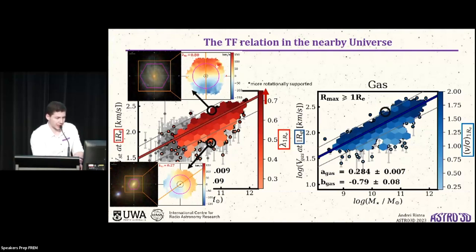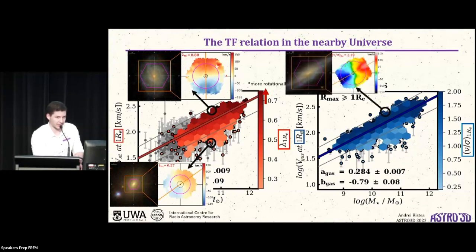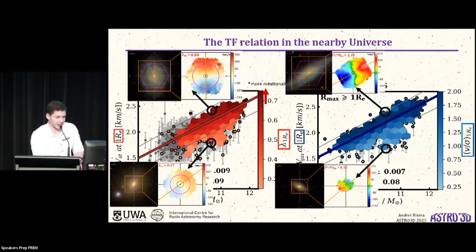If we do the same thing for the gas and pick a galaxy above the relation, again we see a very nice late type galaxy with a stable rotating gas disk, not much turbulence, but if we look at the same stellar mass below the gas Tully-Fisher, what we get is galaxies that look a bit like this. So we see these small turbulent gas disks, which look similar to what we see in high redshift galaxies. And in this particular case, what you notice is the gas disk is also misaligned with respect to the stars, which is quite interesting.